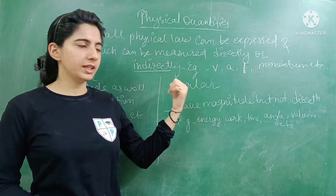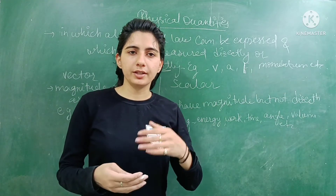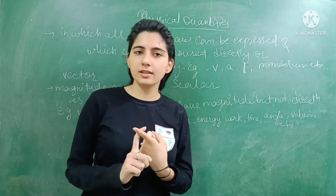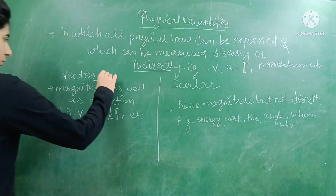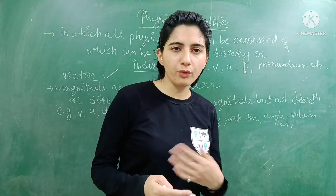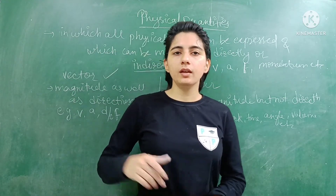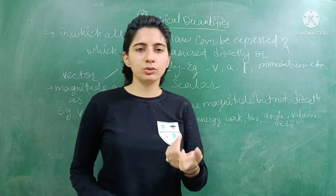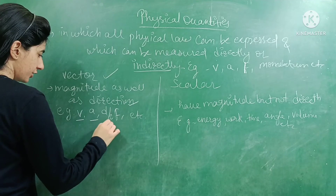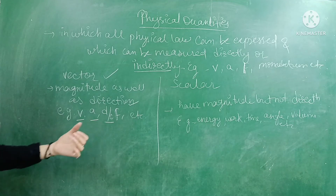After that, you will see the types of physical quantities with some examples. There are two major types: one is scalar and the second one is vector quantity. What is a vector quantity? It has both magnitude as well as direction. We call it vector quantity. For example: velocity, acceleration, displacement, force, etc.